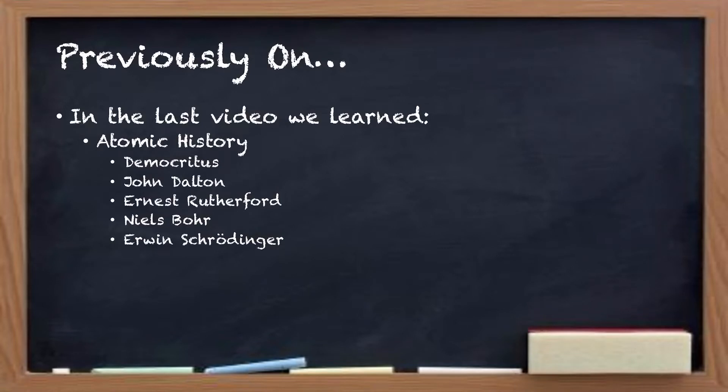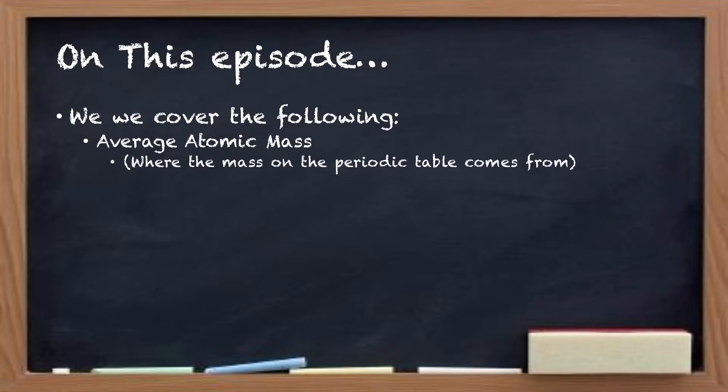So in the last video, we talked about atomic history, how we first started looking at what the atom was in about 300 BC with the Greek dude named Democritus, all the way to just about 100 years ago, to where we are now. Today, we're covering average atomic mass, and that explains where the number on the periodic table came from.